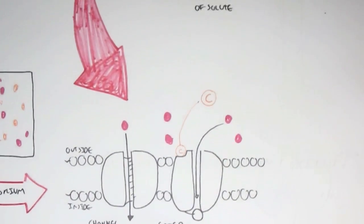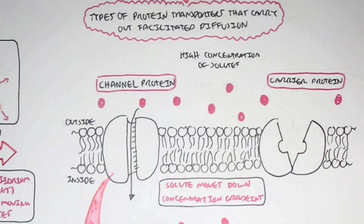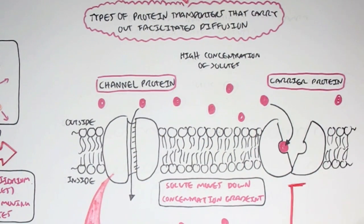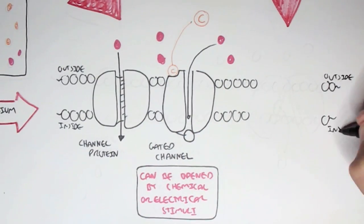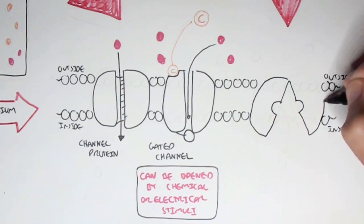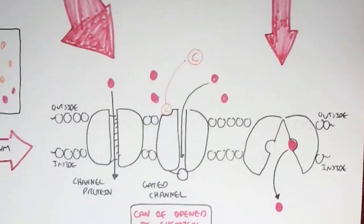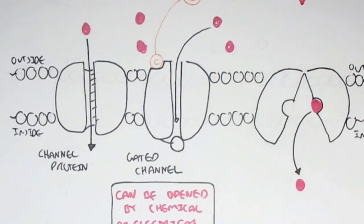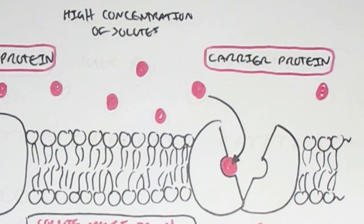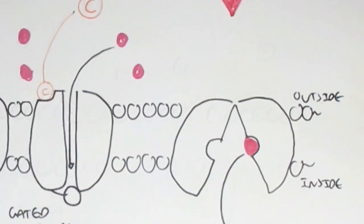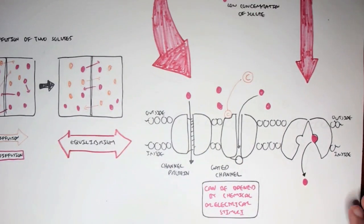The other protein transporter is the carrier protein, which allows a specific solute to bind to a binding site on the carrier protein. When the solute binds, the carrier protein flips over, releasing the solute to the inside. So the solute moves from the outside, binds to the protein, and the protein flips, allowing the solute to move inside.